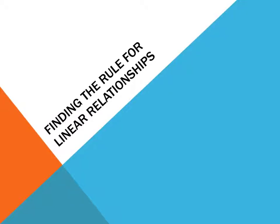Welcome to your video tutorial on finding the rule for linear relationships. Before we begin, we need to do a bit of revision. Cartesian planes have two axes, an x-axis and a y-axis. We can plot different points.